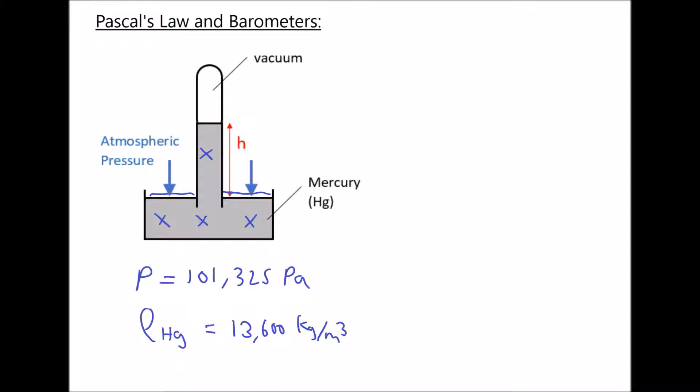So the density of mercury is 13.6 times the density of water and roughly twice the density of steel. So it's a very dense liquid. And that's why we use it in barometers.